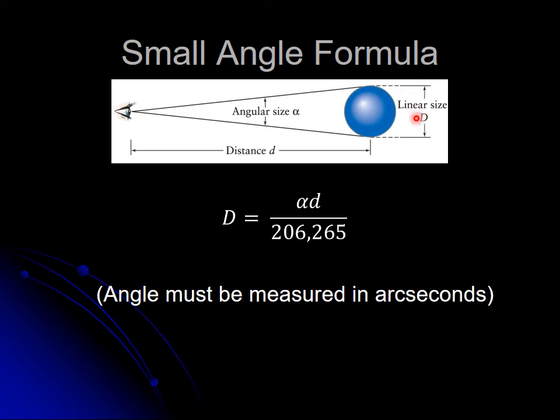If you want to know how big something is, if you can figure out how far away it is, take the angle in arc seconds times the distance divided by the constant 206,265. Don't worry about where that comes from, but divide by that constant, and that gives you the size of the object.